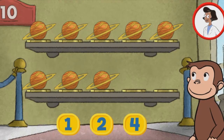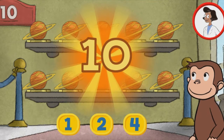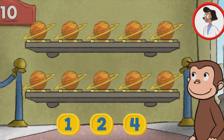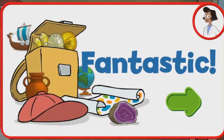Click the green button to keep playing. Here we have eight things. How many more do we need so that we have 10 all together? Two. That's it. The exhibit now has all 10 things. Fantastic.